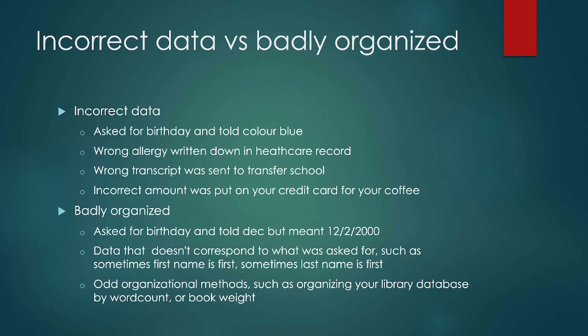If we're asking for a first name and a last name, the order they're in matters — that can have cultural implications, but that organization of data is important. Odd organizational methods can also be an issue. For example, if you're organizing a library database, most people are going to think: author, ISBN, date published, title. However, let's say you decided to organize your books by word count. Technically you can do that — I don't know why you'd want to — or by book weight. You've weighed all your books and you're really in the mood for a four-ounce book today.